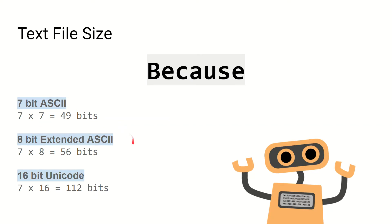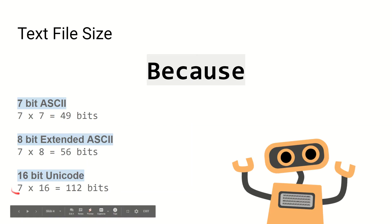If we're using 8-bit extended ASCII, there are seven characters in the word, and each character is represented with eight bits, so seven times eight gives us 56 bits in total. If we're using Unicode, we multiply the frequency by 16 because each character is represented with 16 bits of binary, giving us a file size of 112 bits.